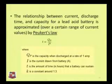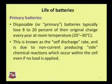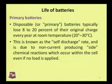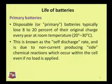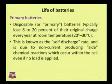The constant k is normally taken as around 1.2 to 1.3. Regarding the life of batteries: for primary or disposable batteries, they typically lose almost 8 to 20 percent of their original charge every year at room temperature of 20 to 30 degrees Celsius. This is known as the self-discharge rate, and it is due to non-current-producing side chemical reactions which occur within the cell even if there is no load.